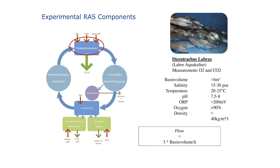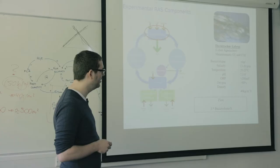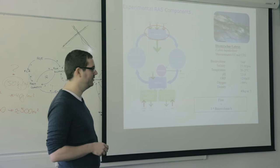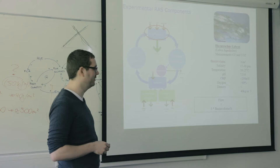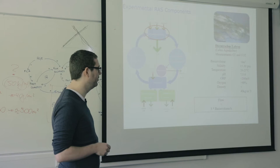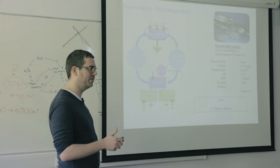This is the production basin with the fish. We had a basin of 6 cubic meters, a salinity of 15 to 30 PSU — we could change it as we wished. We tried to stay between 20 and 25 degrees with a pH of 7.5 to 8. This is oxygen reduction potential — about 200 millivolt in our system. It's important because we use ozone; too much ozone can be dangerous for the fish. Our oxygen was above 90% saturation at all times in the fish tank, and we had a density of roughly 40 kg per cubic meter.